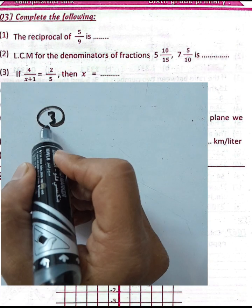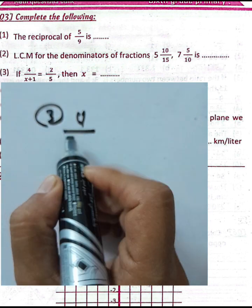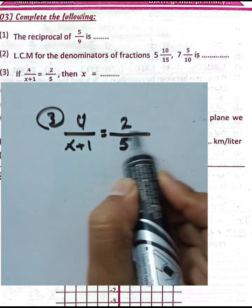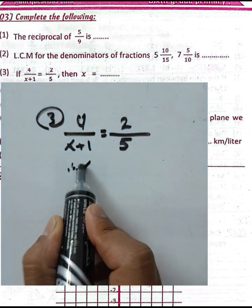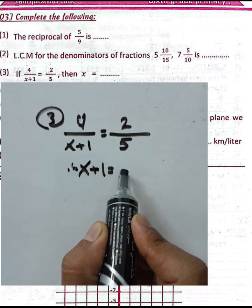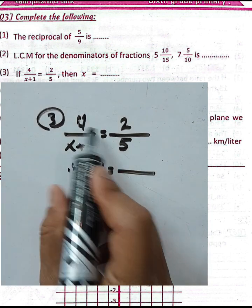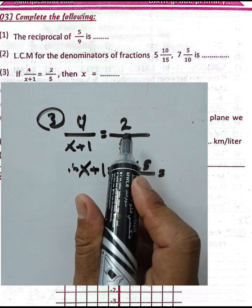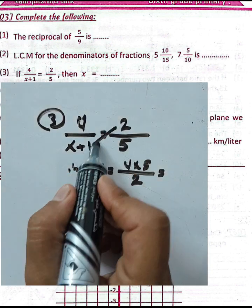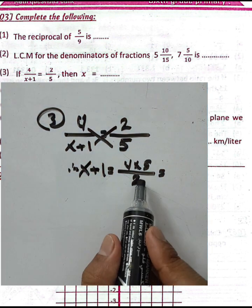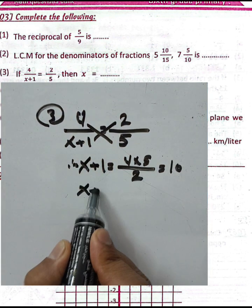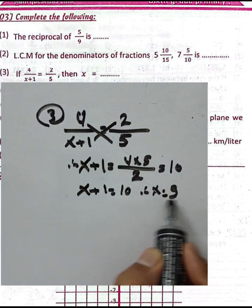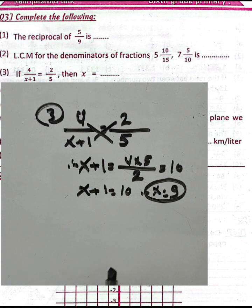Question number three: if 4 over (x + 1) equals 2 over 5, find the value of x. Cross-multiply: x + 1 equals 4 times 5 divided by 2, which is 20 divided by 2 equals 10. Then x equals 10 minus 1 equals 9.